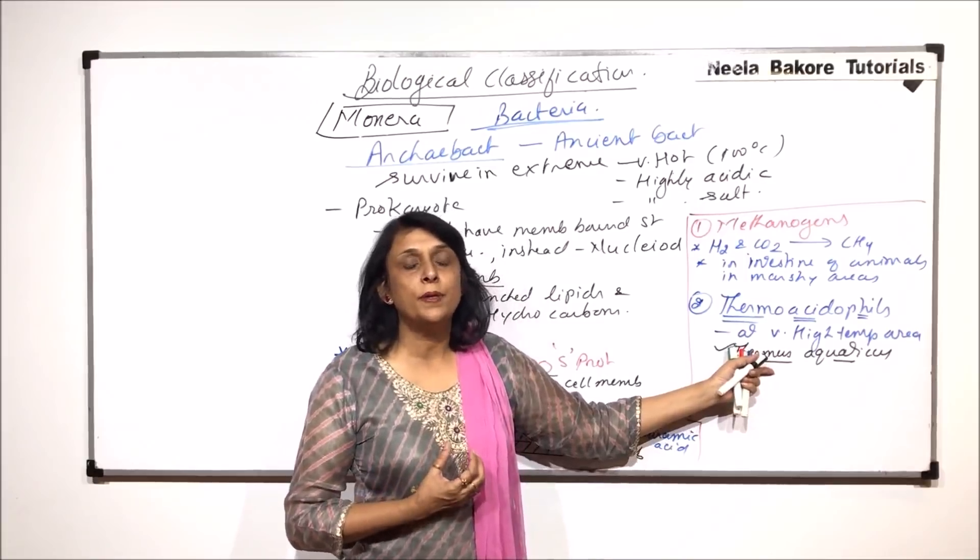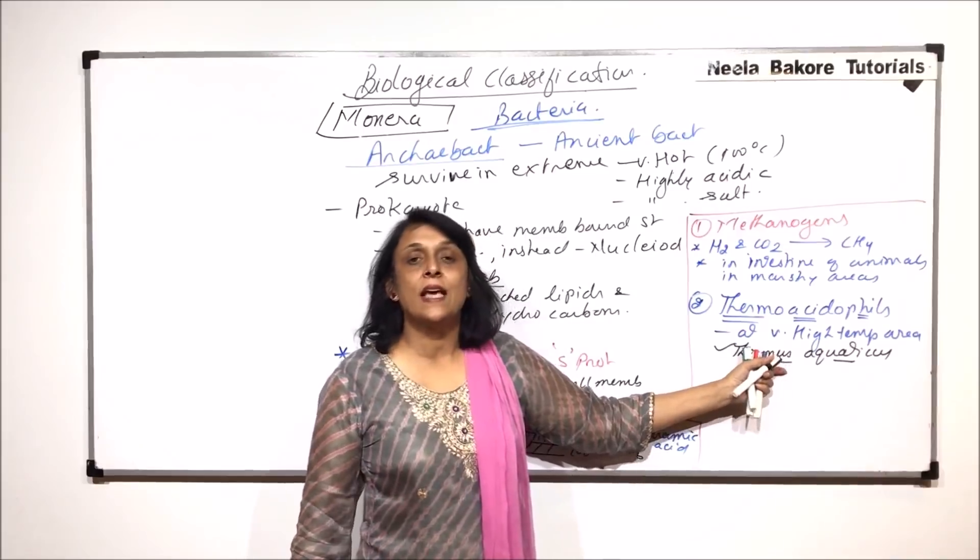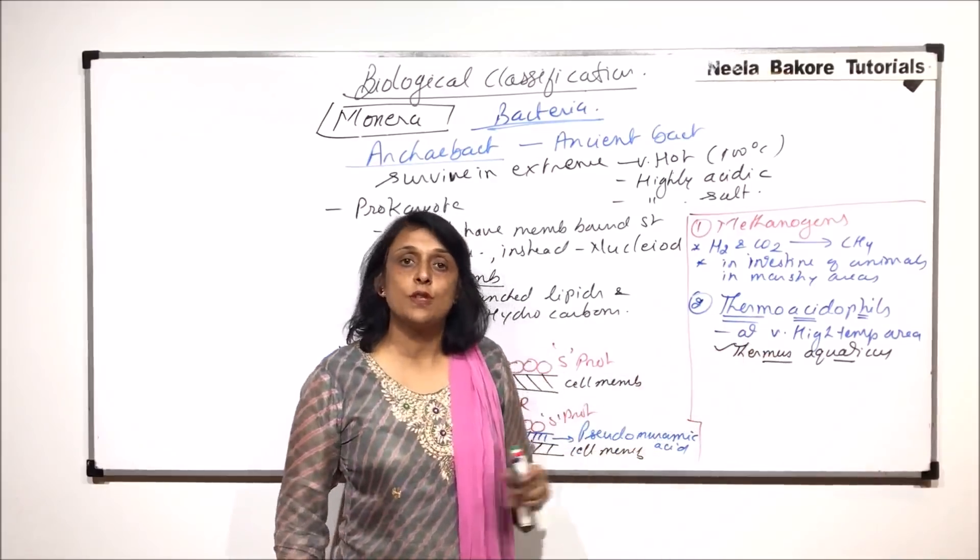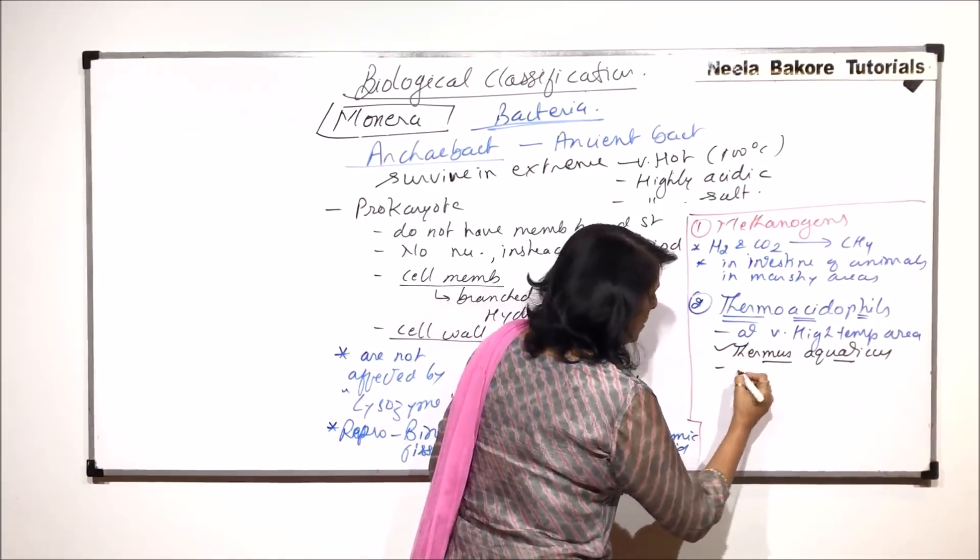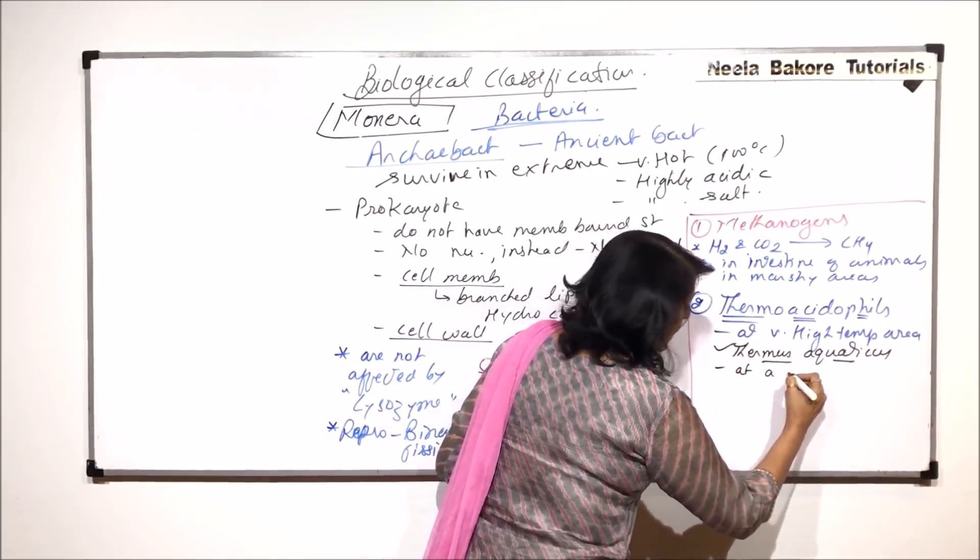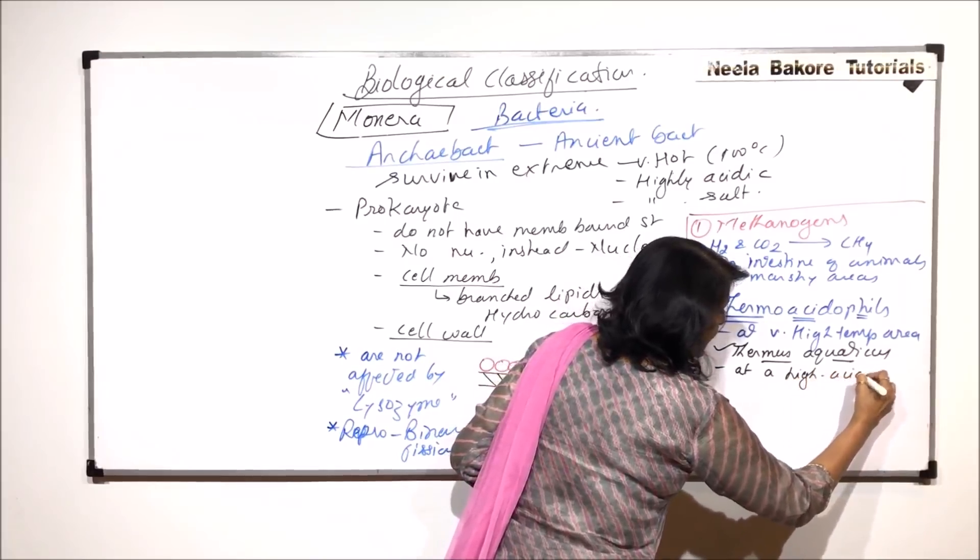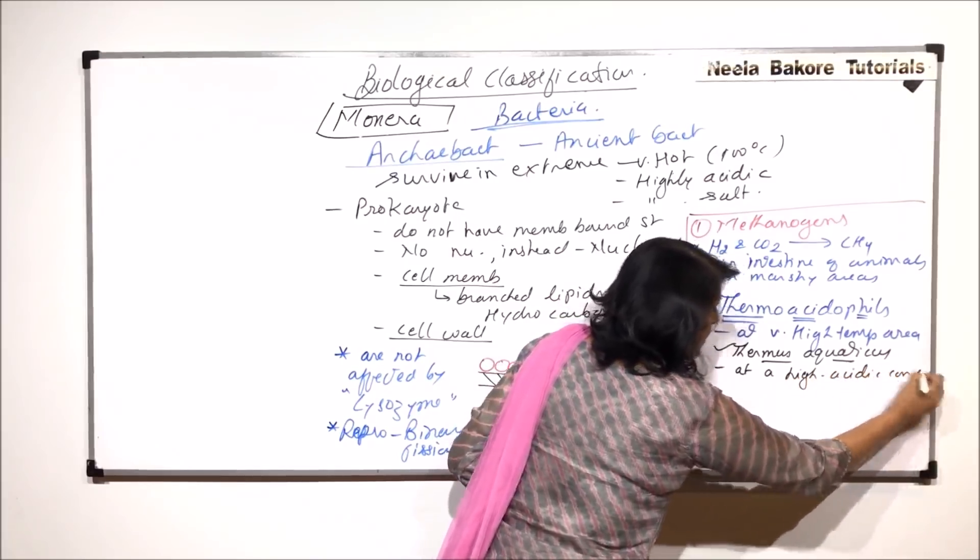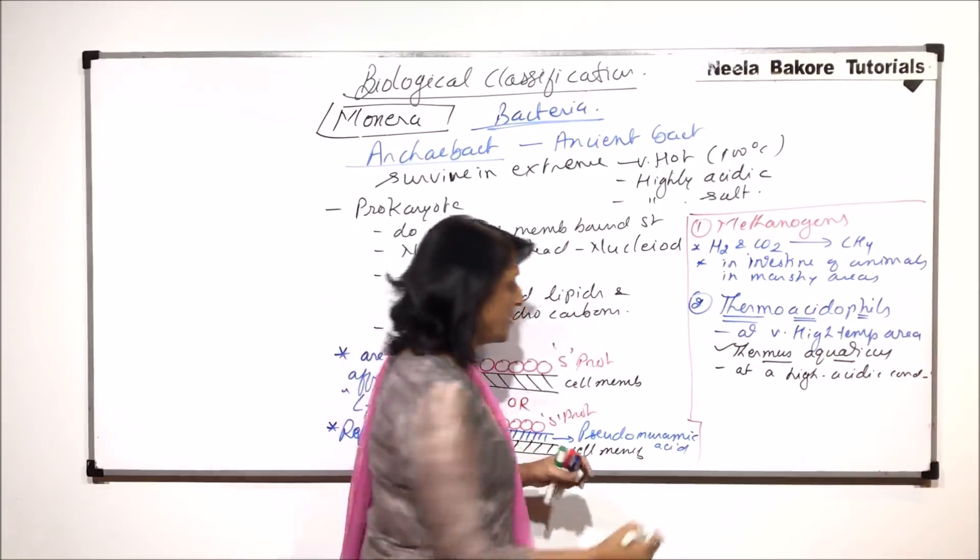Because these bacteria are normally found at higher temperature, they have thermostable enzymes. So we extract the enzyme from this bacterium and we use it for PCR. And they also are found at a very high acidic conditions. So these are again very extreme conditions where these archebacterians can survive.